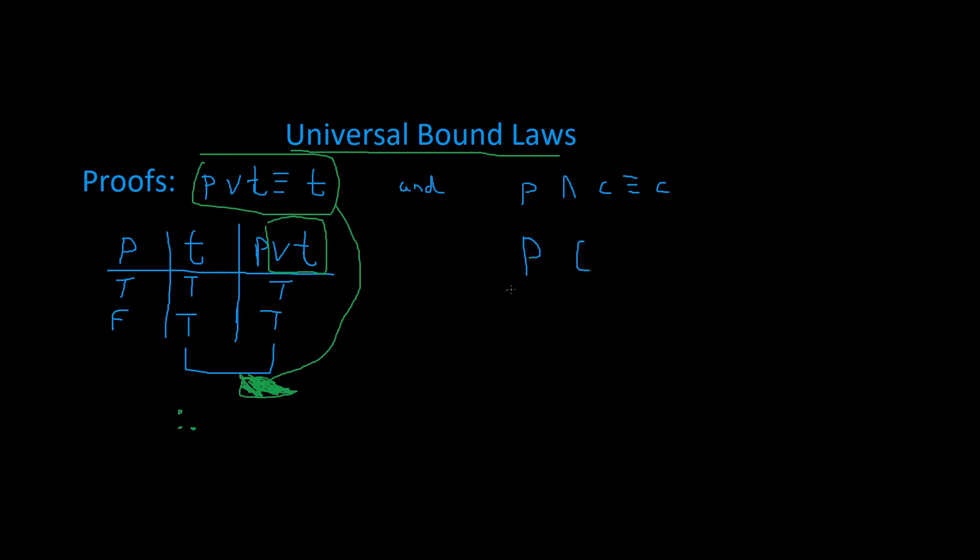We write out P, C. And then the last part, we write out P and C. It's going to be true, false. And then the following is going to be false, false, because contradictions has all false values. And then we have a P and C.